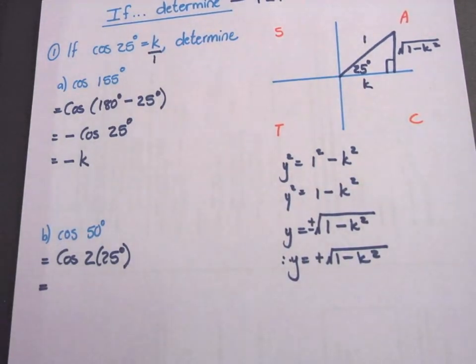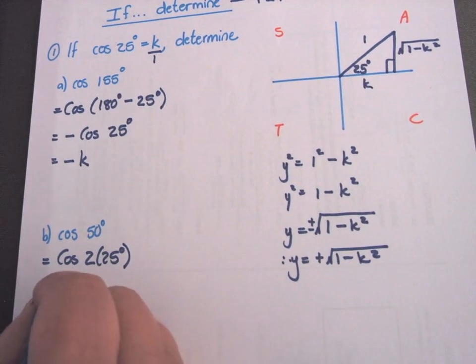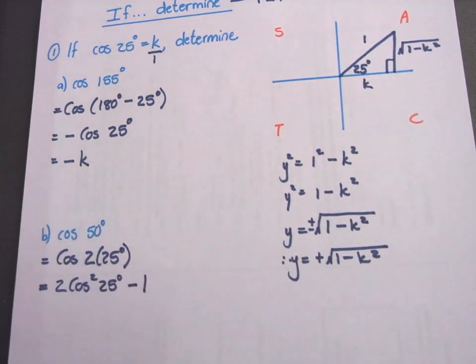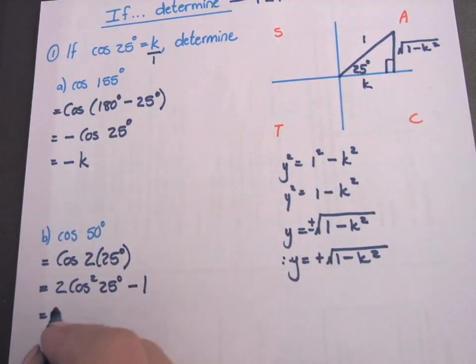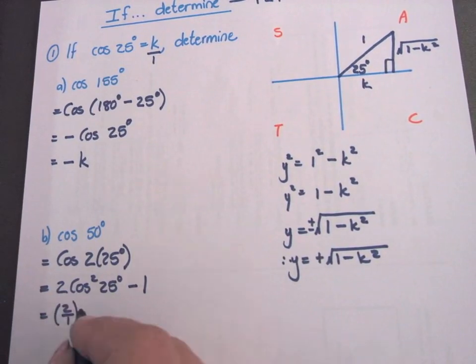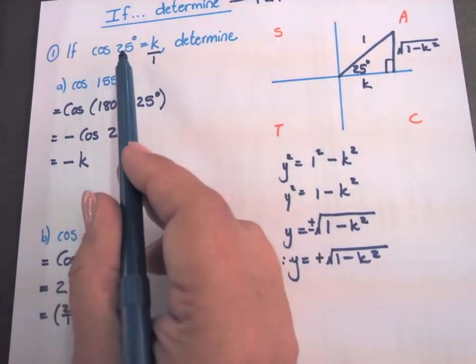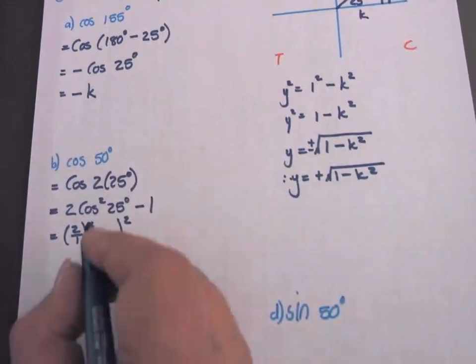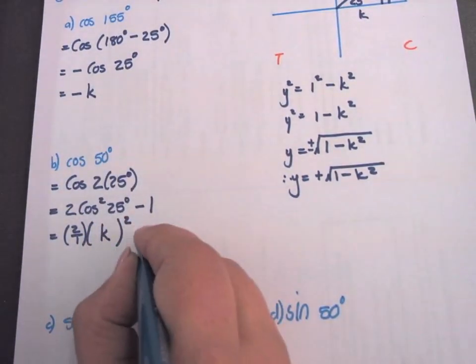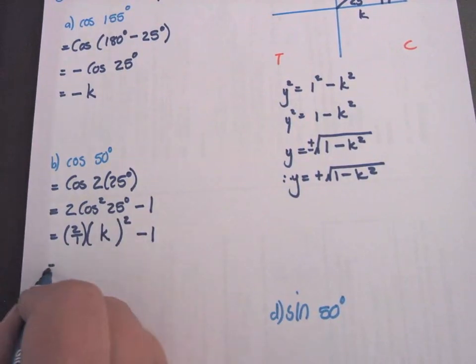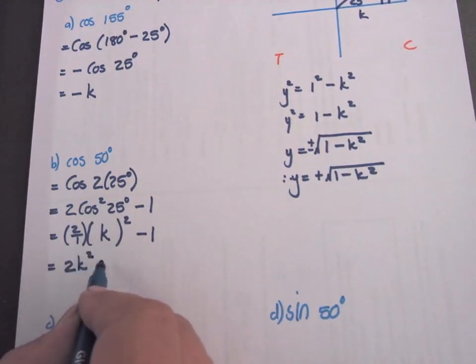Now I have to use my formula for a double angle cos function. What will that be? 2 cos squared minus 1. 2 cos squared 25 degrees minus 1. The cos squared, I know cos 25 is K. So cos squared will be K squared minus 1. And then you get 2K squared minus 1.